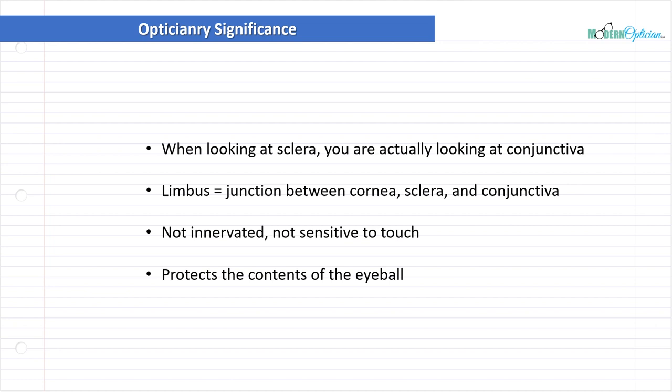And the most important part of the sclera is that it protects the contents of the eyeball. It's the walls that protect all the internal structures of the eye to make sure that the eyeball remains in its shape and supported the way it's supposed to be. And if you ever encounter any kind of traumatic experience, it's tough enough to a certain degree to withstand that trauma.